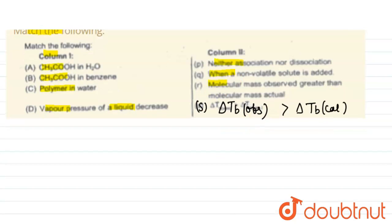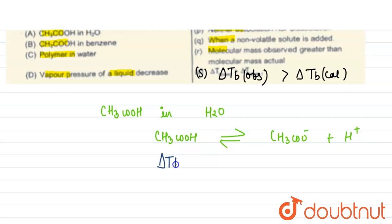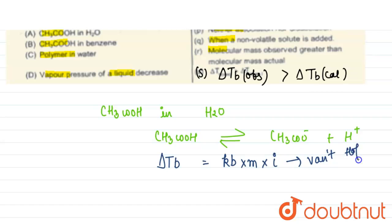Starting with our first: when we add acetic acid in water, acetic acid will dissociate into two ions. CH3COOH will dissociate into CH3COO minus plus H plus. For this type of solution, delta tb observed equals the molal elevation constant into molality into van't Hoff factor (i).